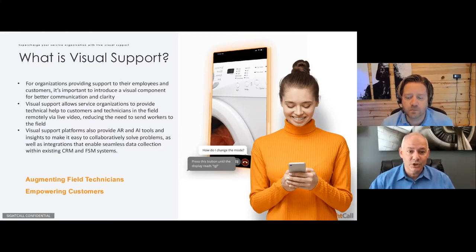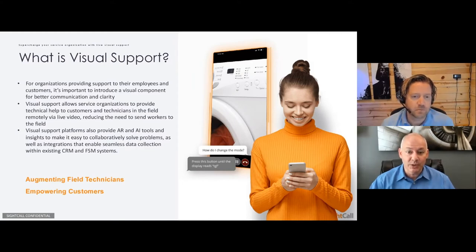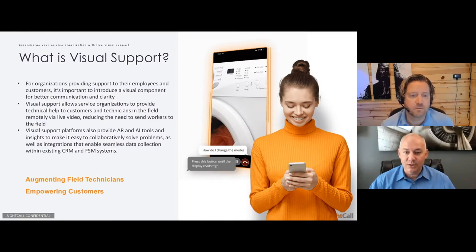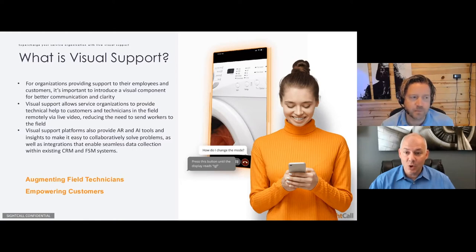The first question you might be asking yourself is: what is visual support? To put it really simply, visual support is a way to facilitate clear communication between a remote expert and someone who needs assistance. We do that through a live video session. When you are conducting a SiteCall session, you actually have a live video session going between the remote expert and the person who needs assistance, whether that's a customer or a field service technician, on their mobile device. When they get connected, they're using the front-facing camera on their mobile device in order to show the remote expert exactly what the problem is.